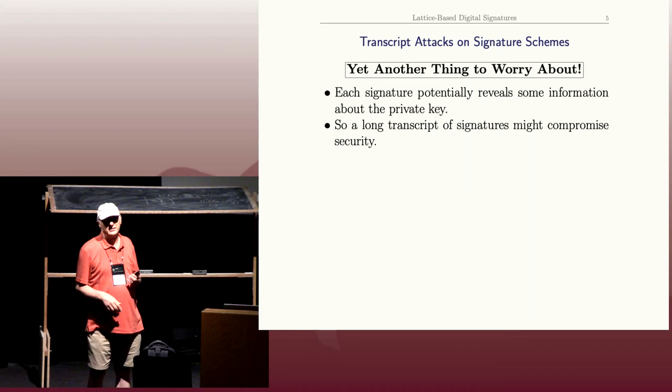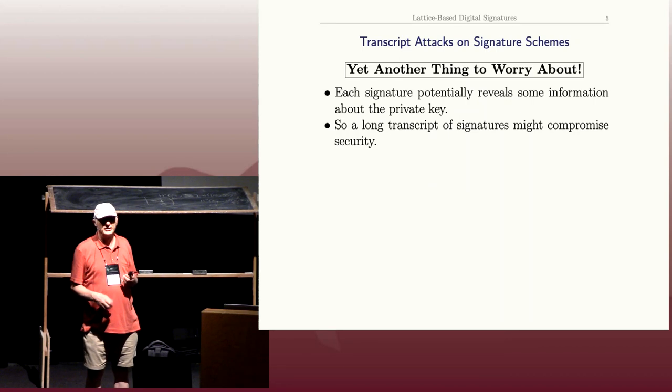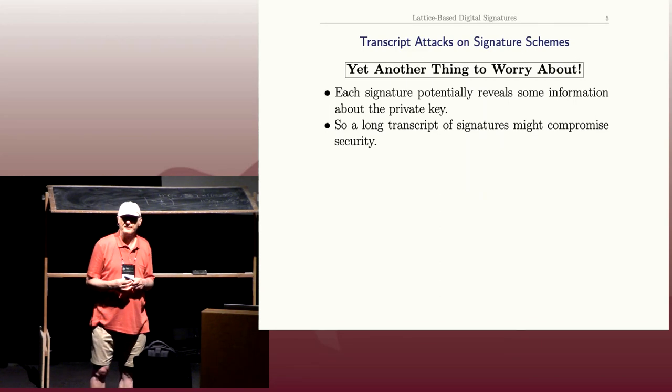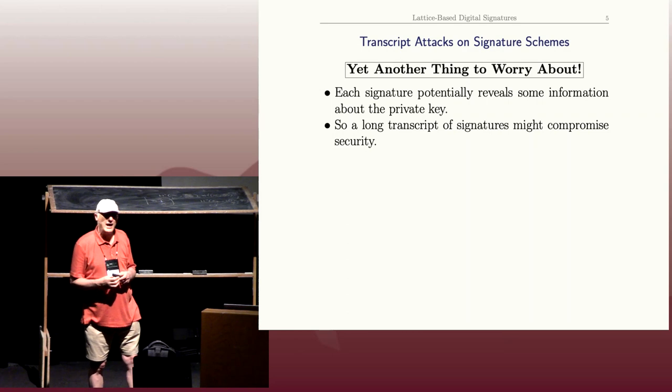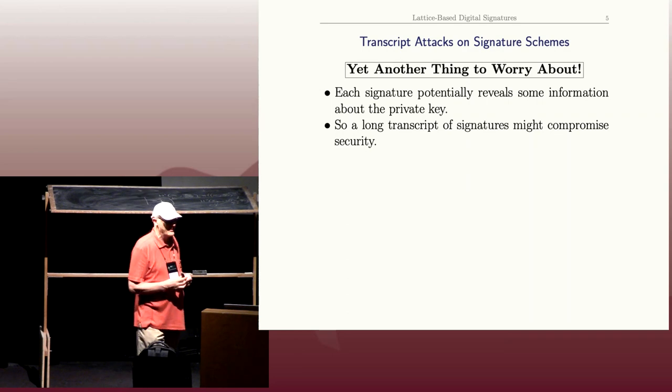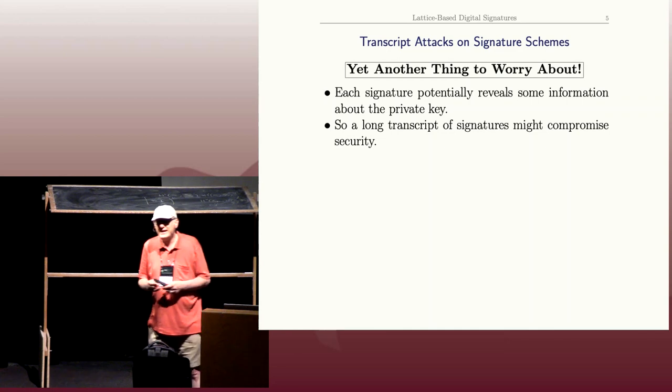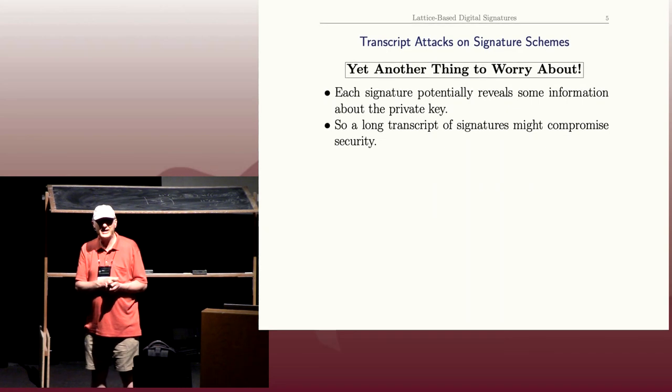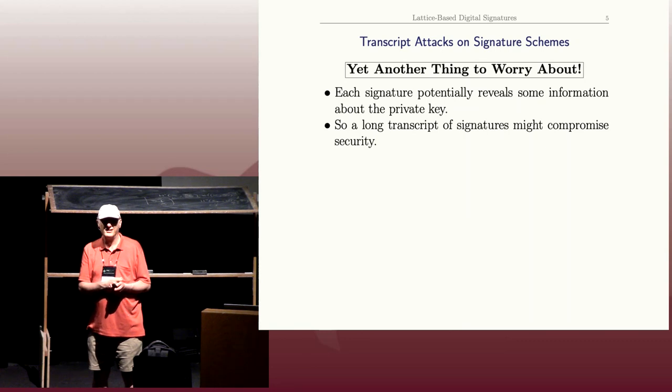But Alice is really Amazon, so she's sending out—I don't know how many orders does Amazon get a day—probably in the millions. So there are hundreds of millions of Alice's signatures out there on hundreds of millions of different documents. And if you stop to think about it, it's conceivable that each of those signatures leaks a little tiny bit of information about her private key.